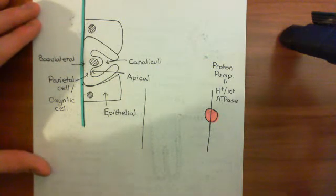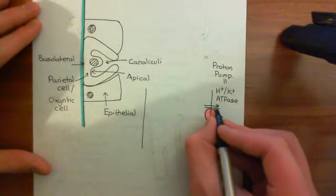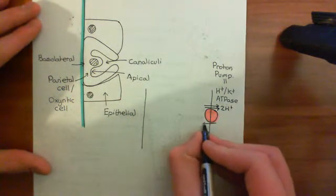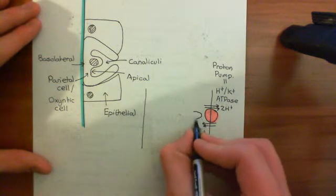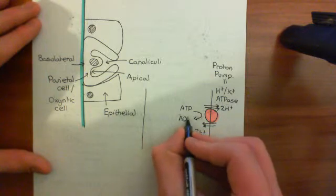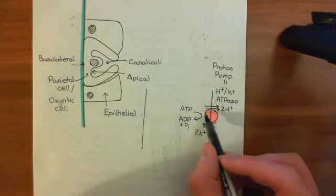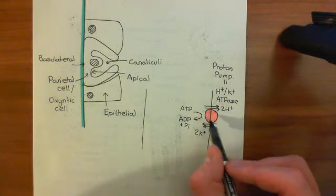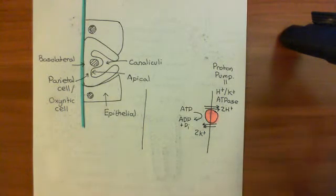What does this protein do? Basically it exchanges protons for potassiums. It pumps two protons out of the cytoplasm of the cell into the canaliculi, and in exchange it brings two potassium ions back in from the canaliculi into the cytoplasm. To do that it requires ATP — it is an enzyme which breaks down ATP, hydrolyzing it to ADP and inorganic phosphate. So it's moving protons from the cytoplasm into the canaliculi and bringing potassiums back in. That is an electrically neutral movement, because you're moving two positively charged ions out and bringing two back in.